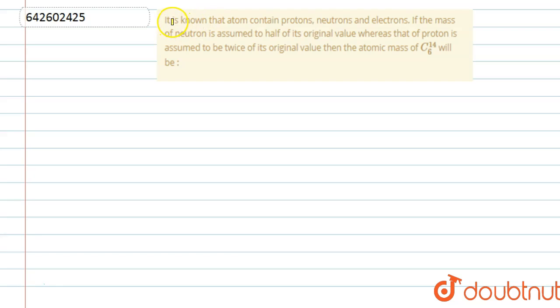Hello everyone. Let's start this question. It is known that atoms contain protons, neutrons and electrons. If the mass of neutron is assumed to half of its original value, whereas that of proton is assumed to be twice of its original value, then the atomic mass of carbon will be.